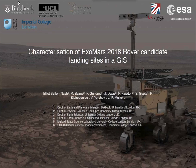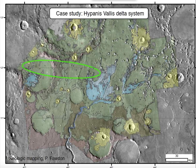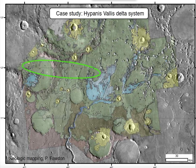There are four sites currently being considered. This is Hippanis Vallis. All the sites are ancient fluvial terrains, and they tend to be towards the dichotomy boundary. This is a GIS context — a geologic map produced in Arc by Peter Forden. This is the nominal 2018 landing ellipse as it stands between the Hippanis Delta and the Sabrina Delta over here on the left.